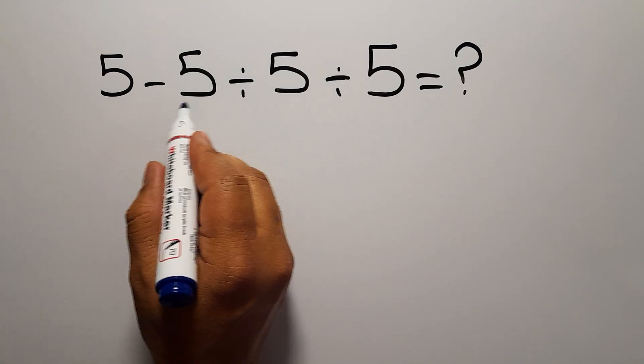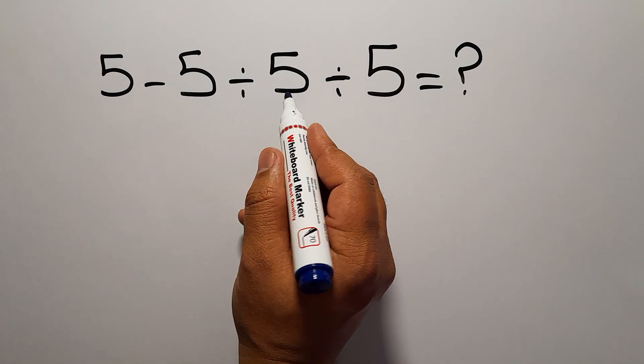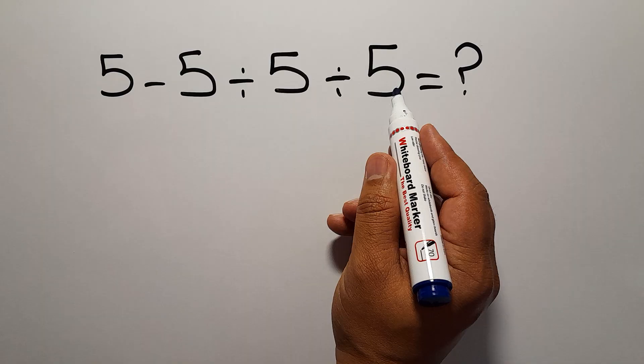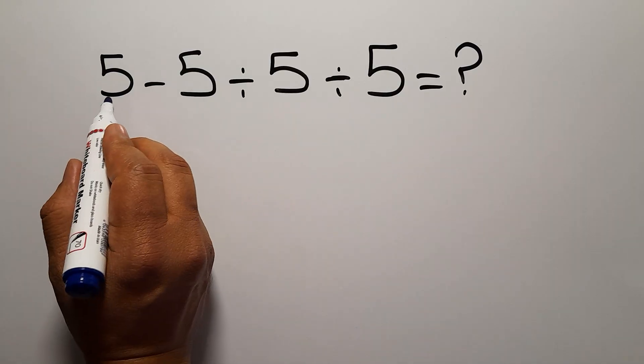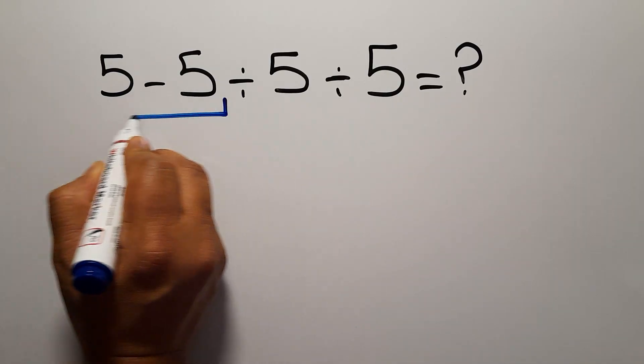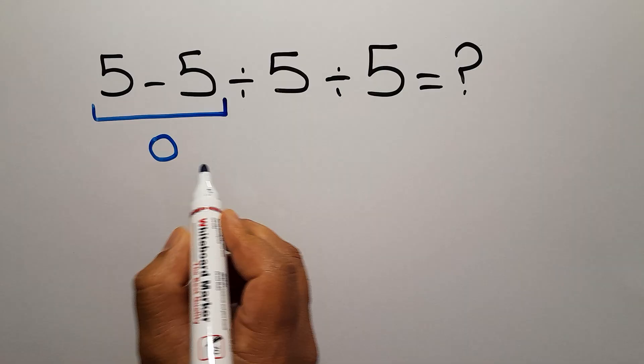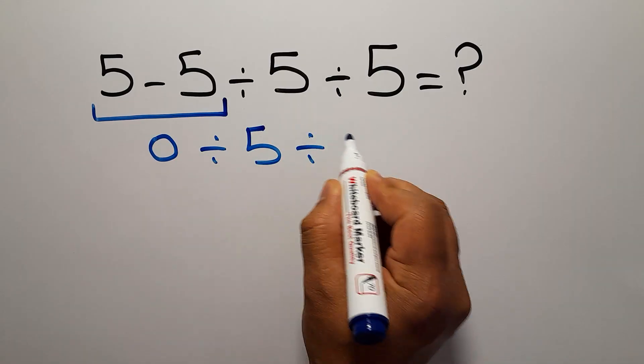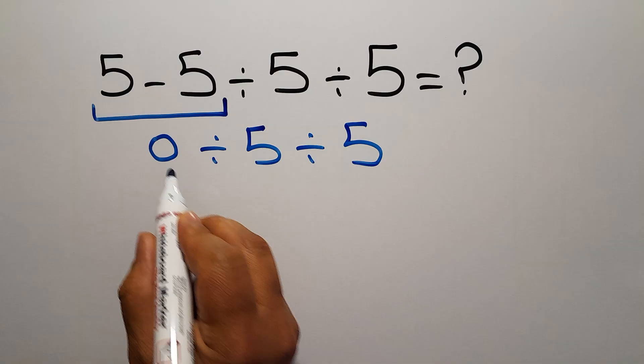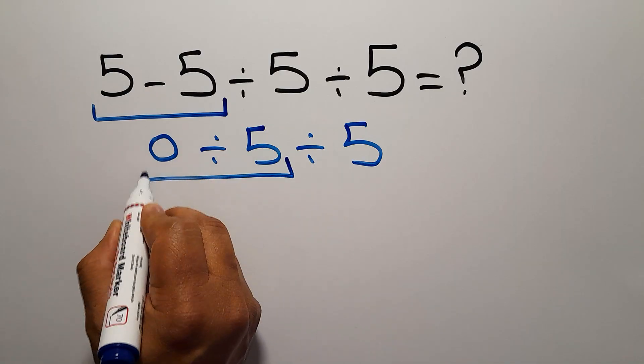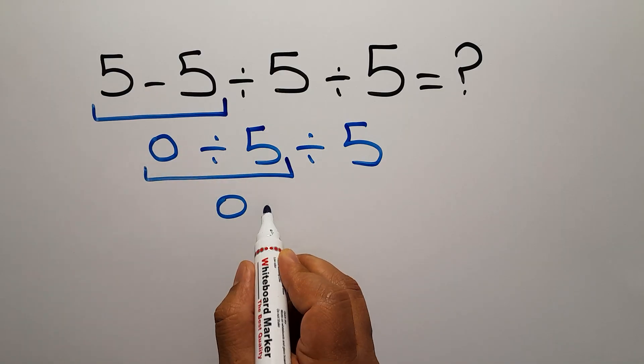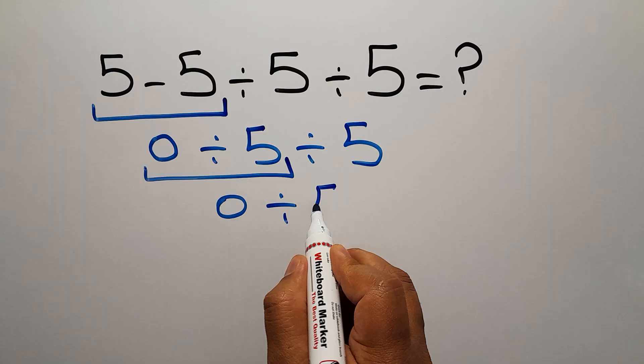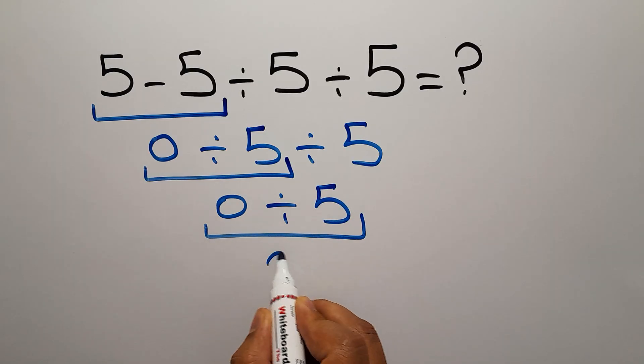5 minus 5 divided by 5 and again divided by 5. 5 minus 5 gives us 0 and 0 divided by 5 and again divided by 5. 0 divided by 5 gives us 0 and again 0 divided by 5 equals 0.